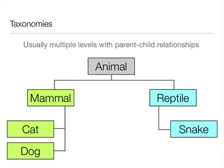In this example, snake is a type of reptile, and because of the hierarchy, it is also a type of animal. However, it is not a type of mammal.